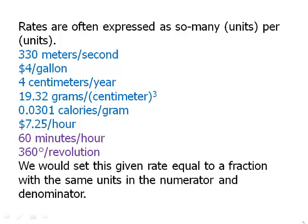We would set this given rate equal to a fraction with the same units in the numerator and the denominator. So either the problem itself would give you one of the rates, or you would know yourself something about the units and the way that the units are related. You set that up as a ratio and then you set that equal to a fraction on the other side that matches the same units in the numerator and the denominator.